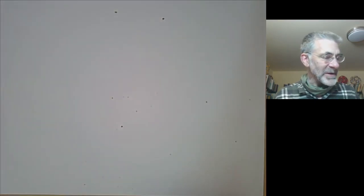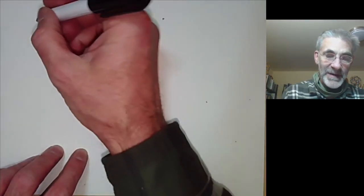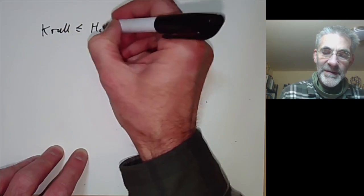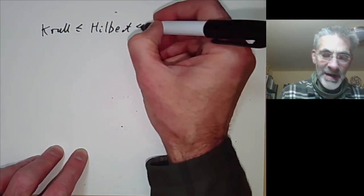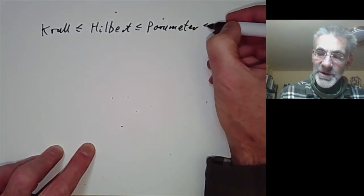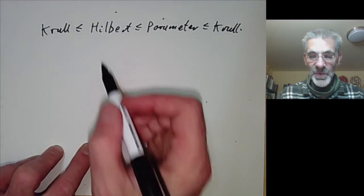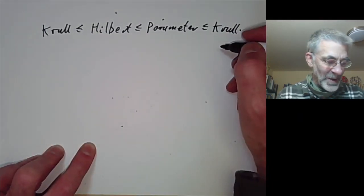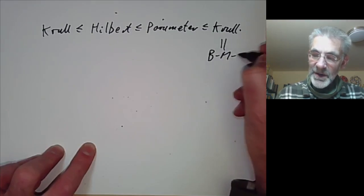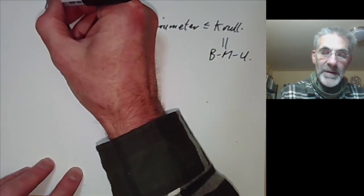We are going to prove that all four definitions of dimension of a ring are equivalent. We will show the Krull dimension is less than or equal to the Hilbert polynomial dimension, which is less than or equal to the system of parameters dimension, which is less than or equal to the Krull dimension. These three inequalities together show the three are equal. We will also prove the Krull dimension equals the Brouwer-Menger-Uryson definition. This is all for Noetherian local rings.